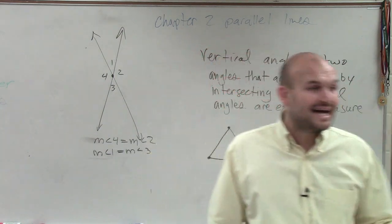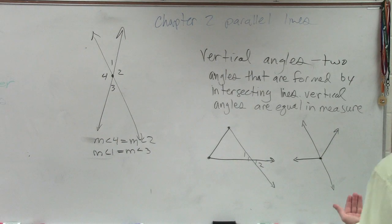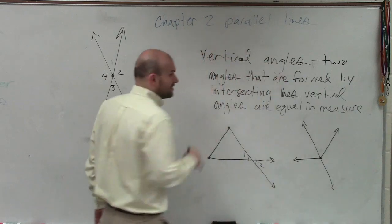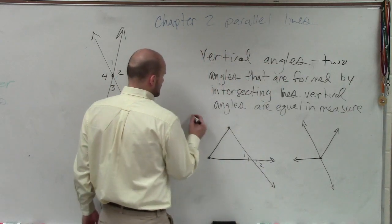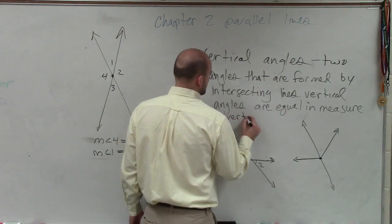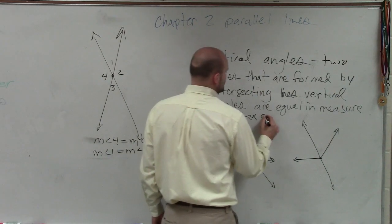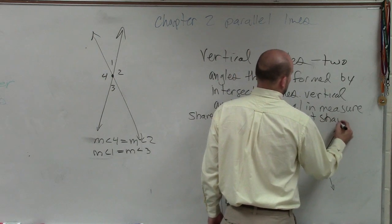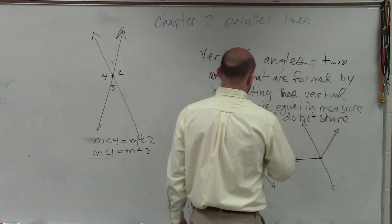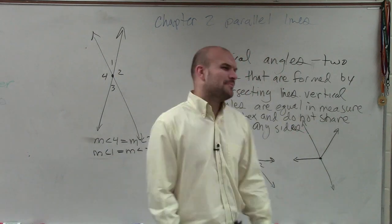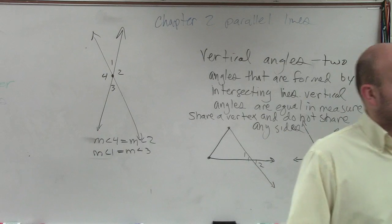They are non-adjacent sides. And I didn't write that. Why did I not write that? Two angles that are formed by the intersecting lines. Vertical angles, I'm sorry, I forgot to mention another point. Share a vertex and do not share any sides. So my apologies. I forgot to add that in when you guys wrote that down.